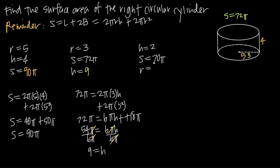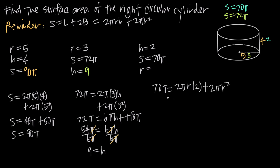In our last example, we're given the height and the surface area and need to find the radius. The height is 2 and the surface area is 70π. Plugging into our formula: 70π equals 2π times r times the height 2, plus 2πr². Simplifying: 2 times 2 gives 4, so we get 4πr plus 2πr².